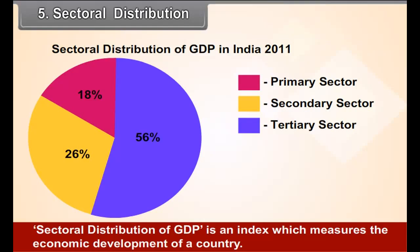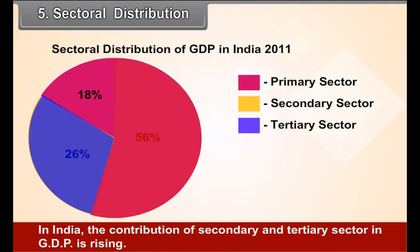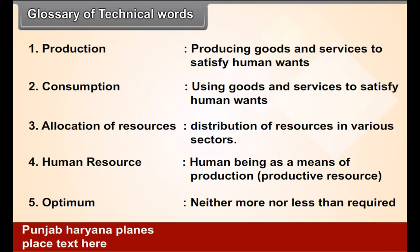Sectoral distribution of GDP in India 2011. Sectoral distribution of GDP is an index which measures the economic development of a country. In India, the contribution of the secondary and tertiary sector in GDP is rising, indicating an increase in India's economic development.